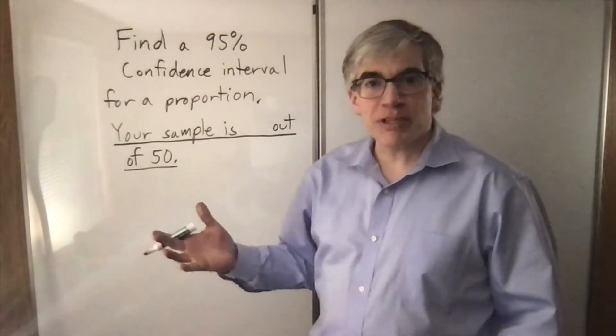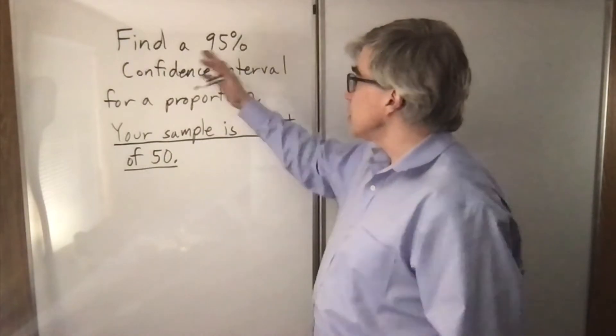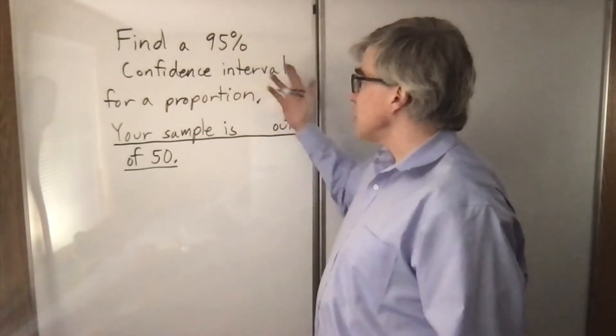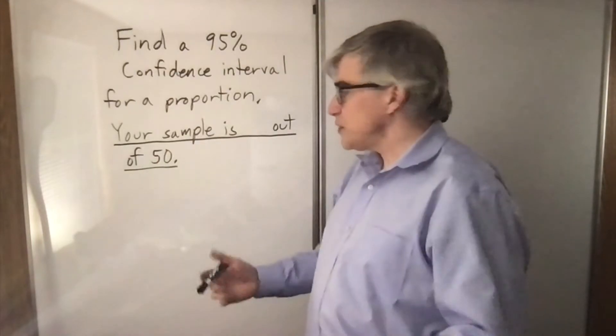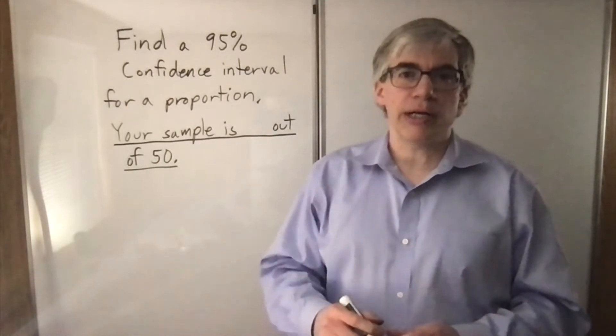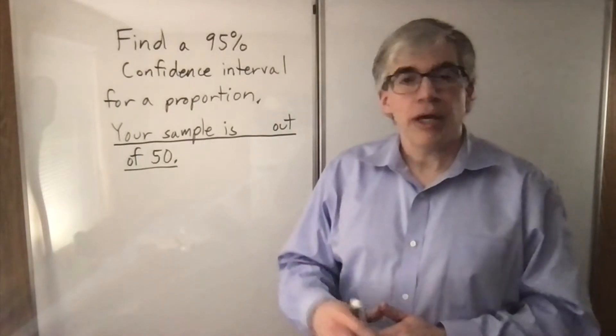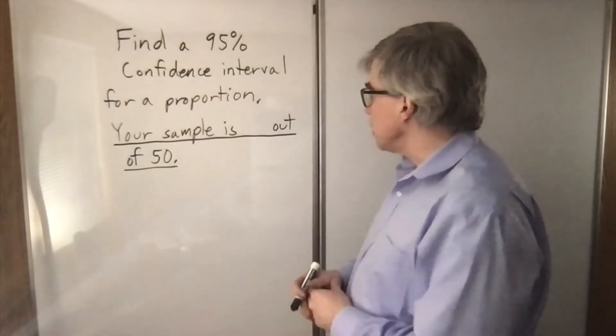Here is a fairly common statistics problem. You're supposed to find a 95% confidence interval for a proportion, and they say, well, I measured 50 and I got 12, or I got 27, or etc. And you can calculate the confidence interval.